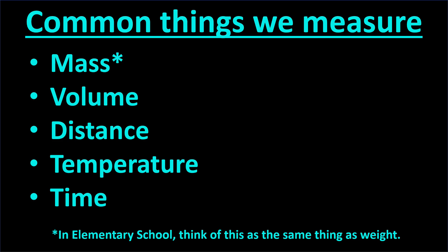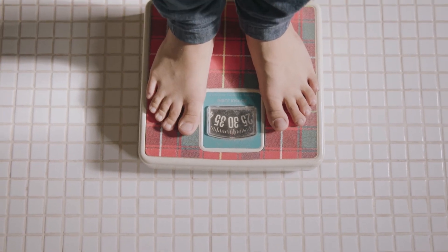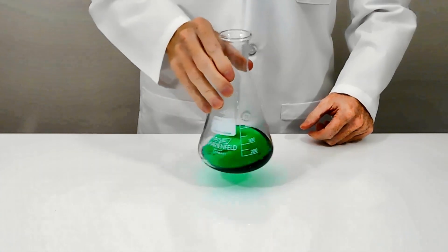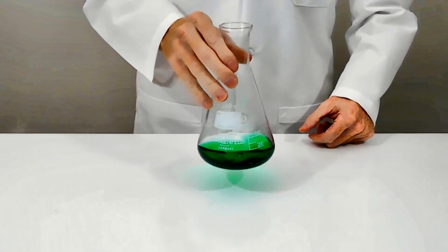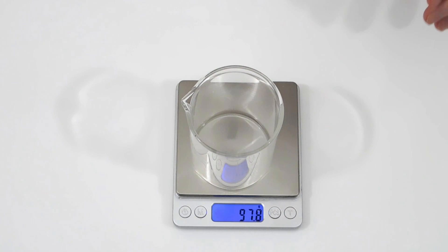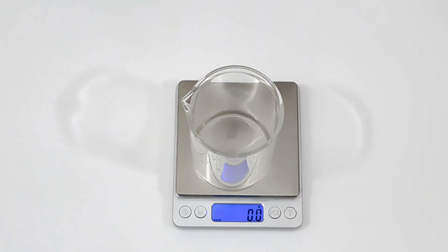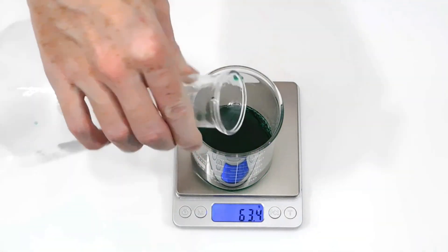In elementary school, we can think of mass as the same thing as weight. Although we also measure some of these everyday, scientists and engineers use special devices and names for those devices. Let's say we are chemical engineers and have just invented this new solution. We want to know exactly how much is in this flask. To find the mass, we will put a beaker on this balance. In science, we call this a balance, not a scale. Then we tare it. That means we reset the reading so it is zero. Next, we pour in the solution, and find its mass is 63.4 grams.